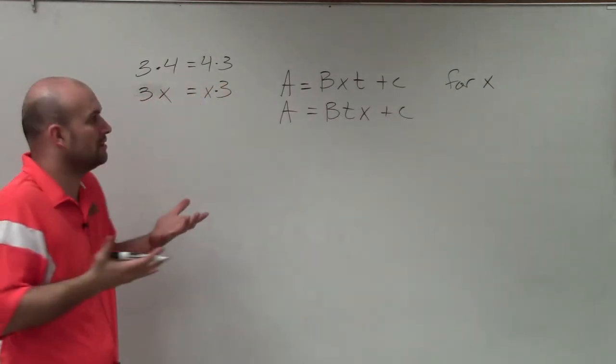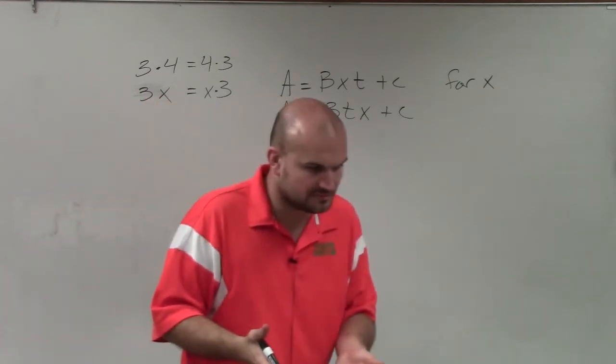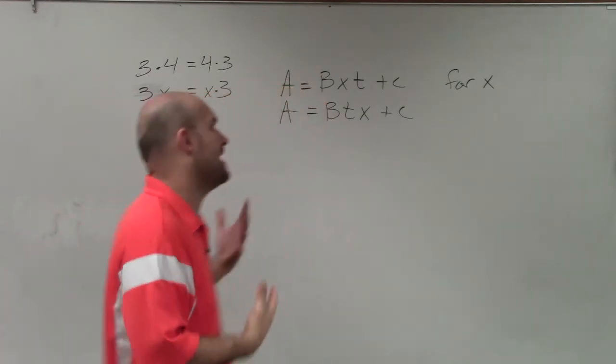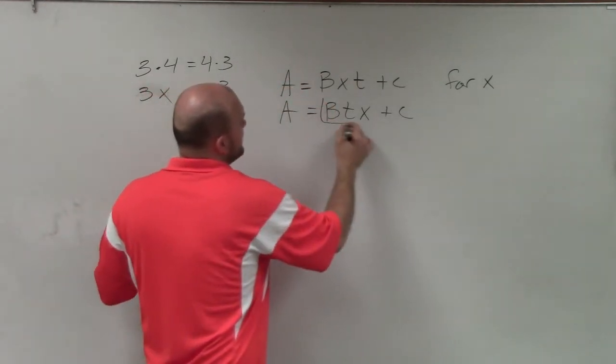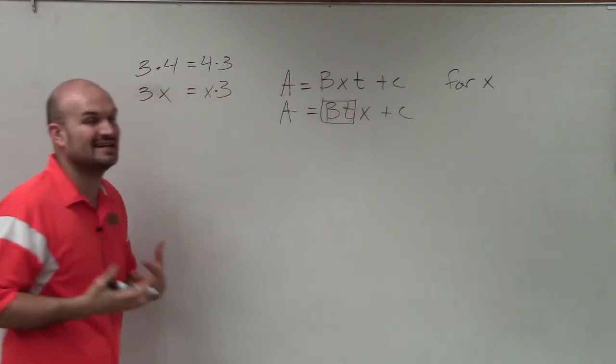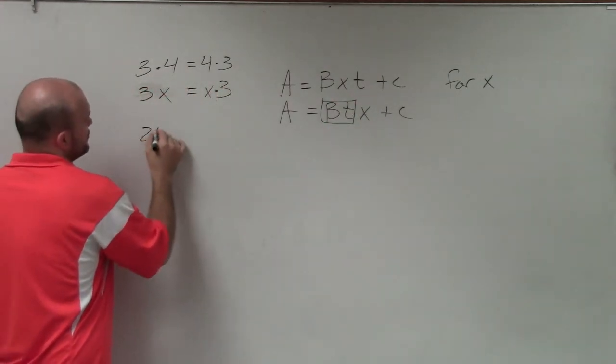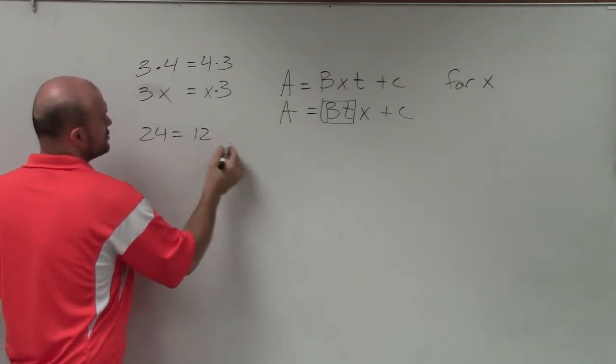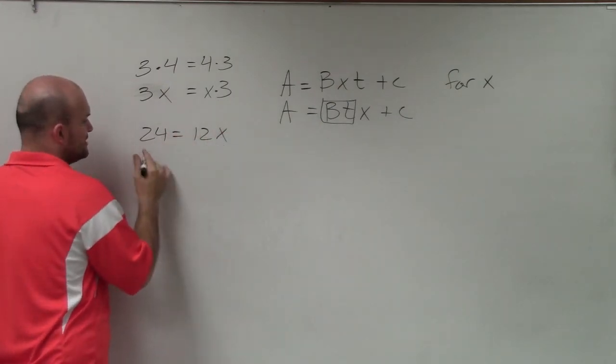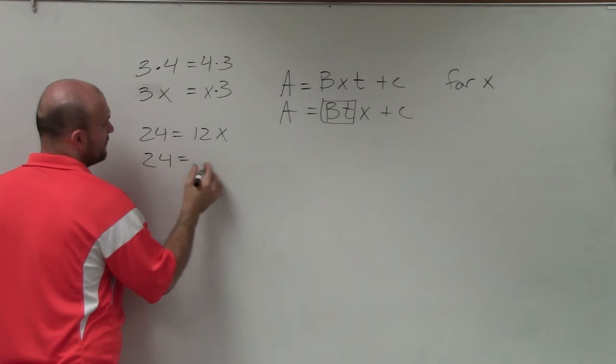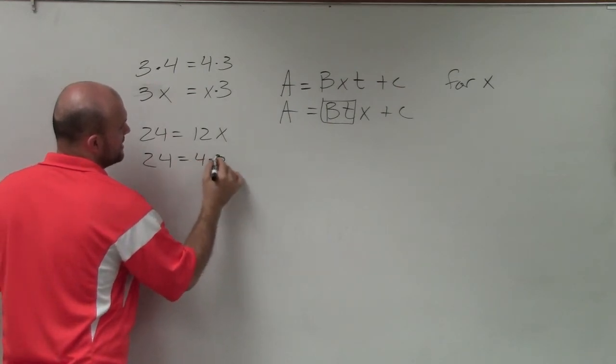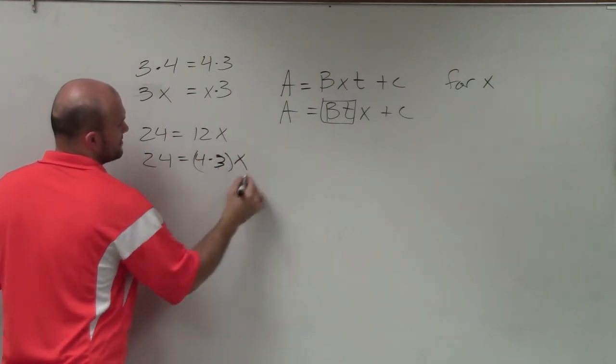That kind of gives me a little bit more idea of solving the problem. OK, I'm going to now treat this as its own quantity, b times t. And the same thing, if I was going to say 24 equals 12x, could we still say that's the same thing as 24 equals 4 times 3 times x? It's the same thing, right?